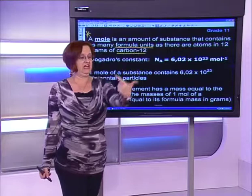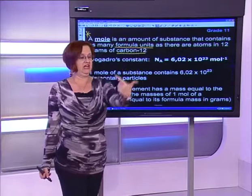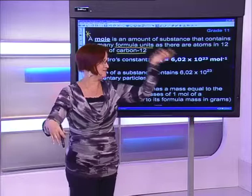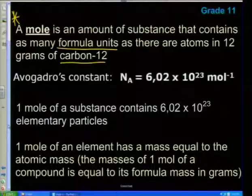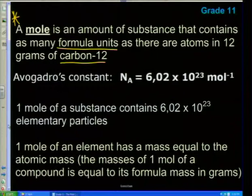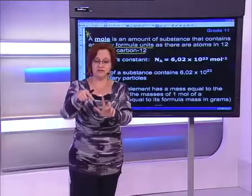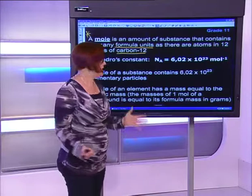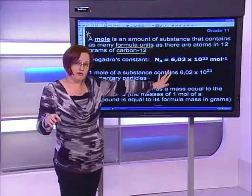That could be atoms, electrons, protons, people — there aren't even that many people on the planet. It could be legs, arms, hair, whatever. One mole of a substance contains 6.02 × 10²³ elementary particles. Elementary particles, grade 11s, are protons, electrons, neutrons, atoms, ions, or molecules. One mole of anything has 6.02 × 10²³ in it.